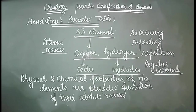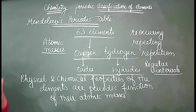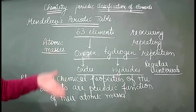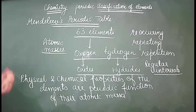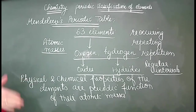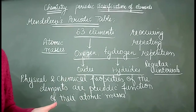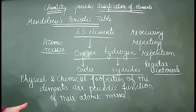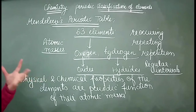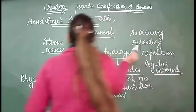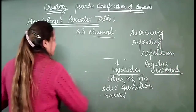Similar-property elements were clubbed together on one side and different ones on the other. He started dividing them into certain groups and families — like the oxygen family, halogen family, and so on. Elements that were similar formed one family or group, and those that were different were placed in a separate family or group.